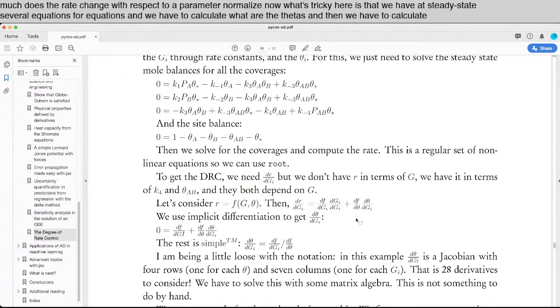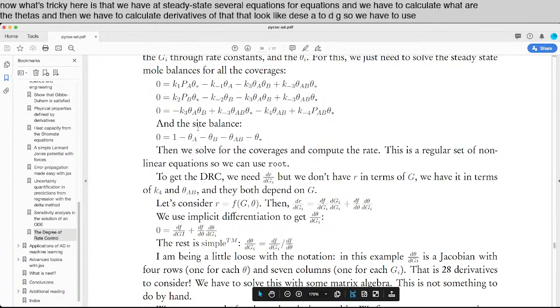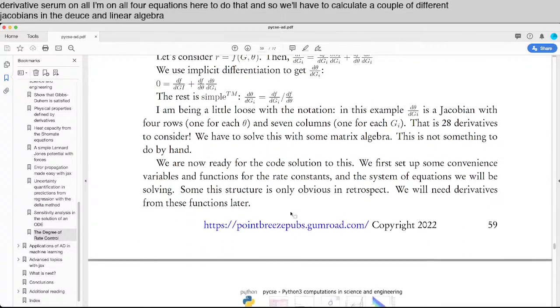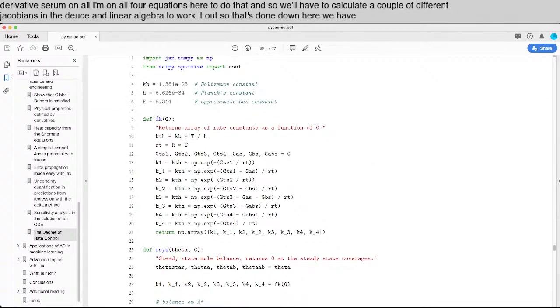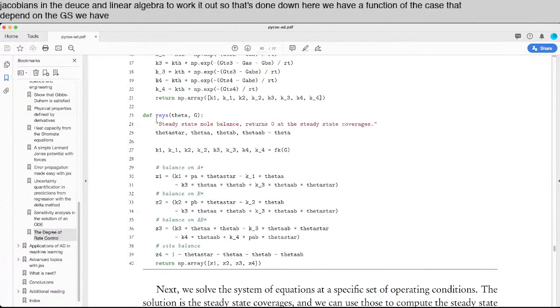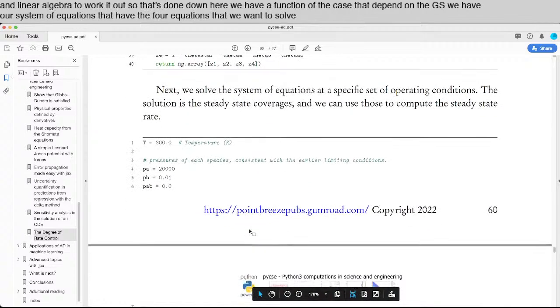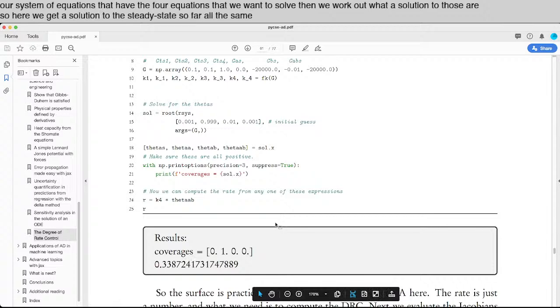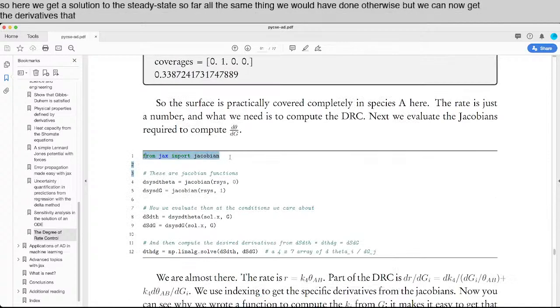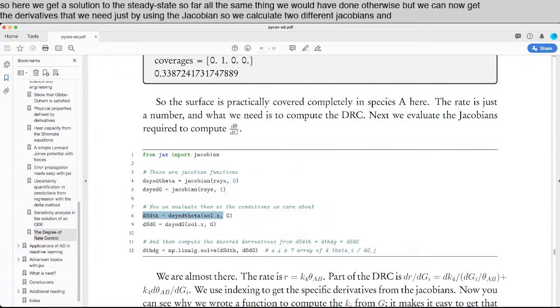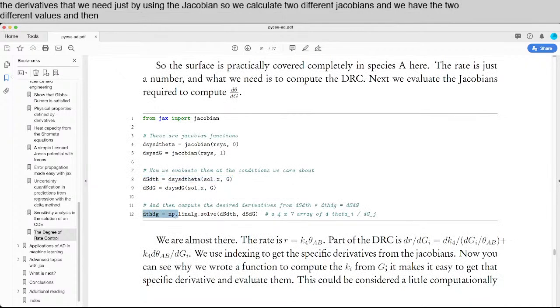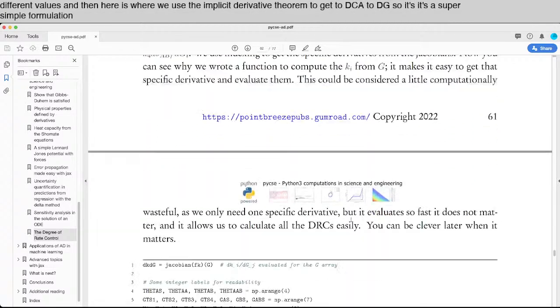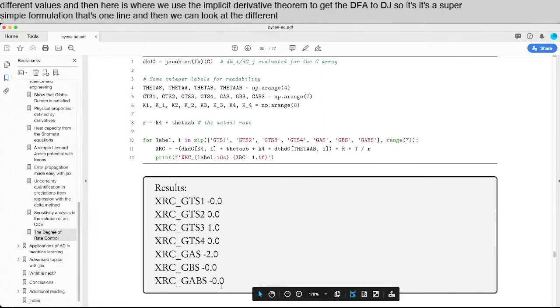And then we have to calculate derivatives of that that look like d theta dg. So we have to use the implicit derivative theorem on all four equations here to do that. And so we'll have to calculate a couple of different Jacobians and then do some linear algebra to work it out. So that's done. Down here we have a function of the k's that depend on the g's. We have our system of equations that have the four equations that we want to solve. Then we work out what a solution to those are. So here we get a solution to the steady state. So far all the same thing we would have done otherwise. But we can now get the derivatives that we need just by using the Jacobian. So we calculate two different Jacobians and we have the two different values. And then here is where we use the implicit derivative theorem to get the d theta dg. So it's a super simple formulation that's one line. And then we can look at the different derivatives that we were interested in.